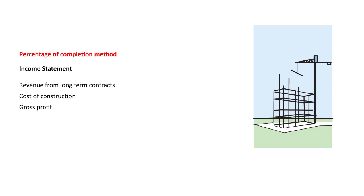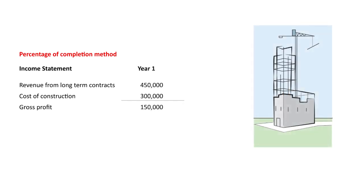In this particular example, hypothetically say we have completed 45% of the work at the end of the first year based on costs at that time. So at the end of the first year, we would show 45% of the million dollars, which is $450,000. The cost at that point was $300,000, which represented 45% of the total anticipated cost, so we would have gross profit of $150,000.